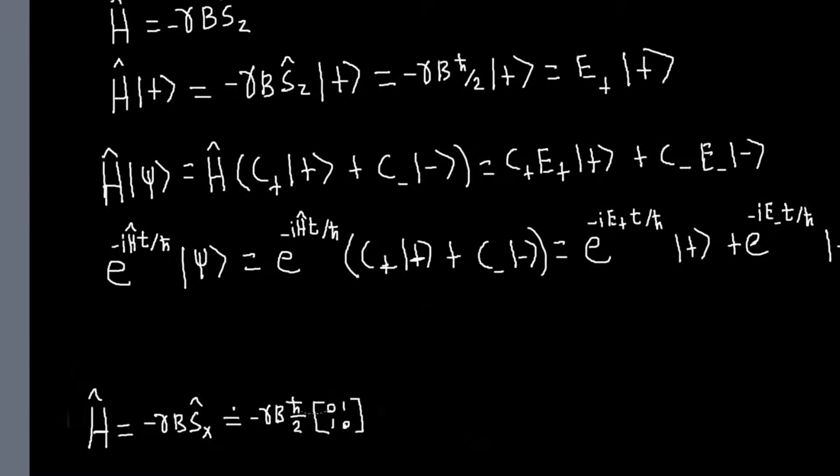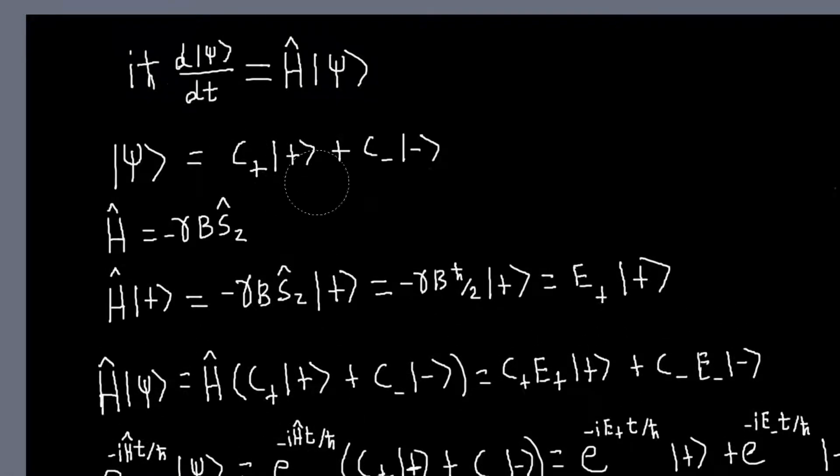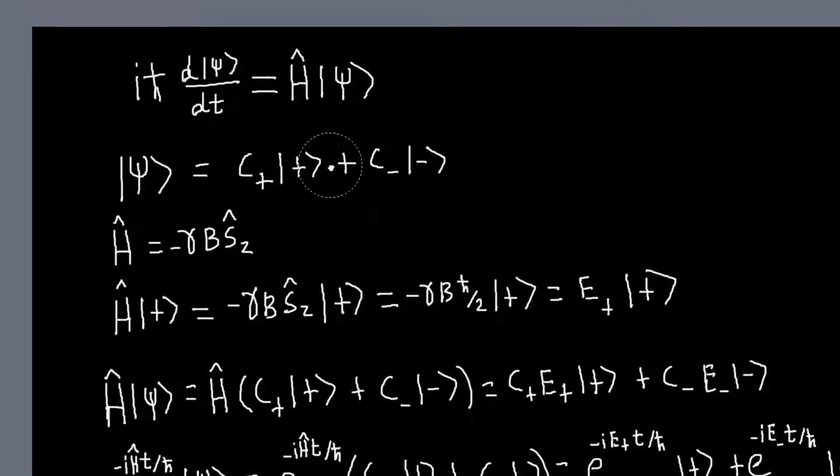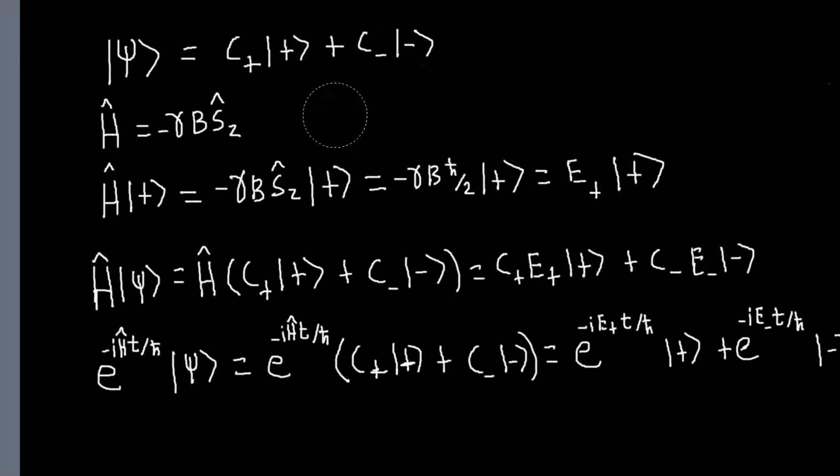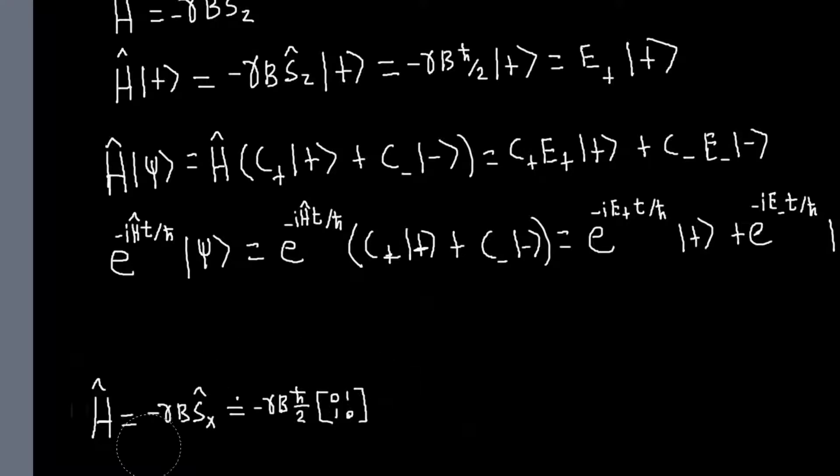So I want to look at the problem we looked at last time, which is we have our magnetic field in the x direction. And we solved this problem before by we had our initial state expanded in terms of the sc kets, and what we did is we said, okay, well, let's rewrite our sc kets in terms of the sx kets, because once we do that, we know that the sx kets are eigenstates of the Hamiltonian.